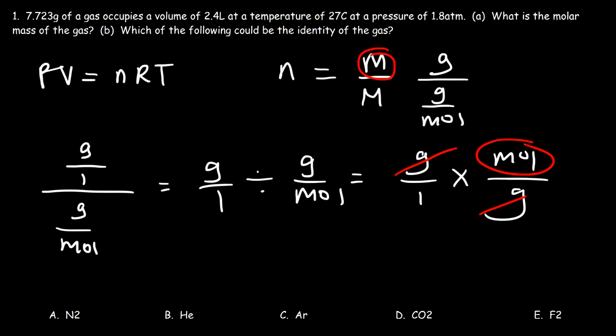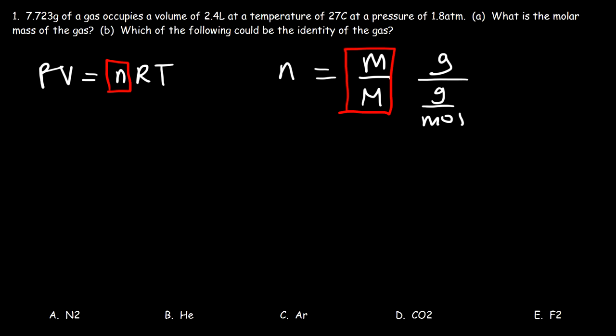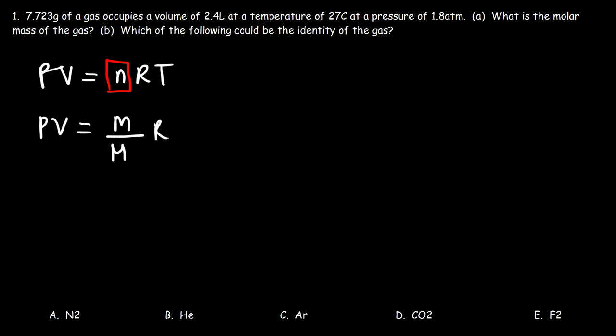So what I'm going to do is replace n with the mass divided by the molar mass. Let's use capital M to represent the molar mass. So we're going to have PV is equal to m mass divided by capital M, the molar mass, times RT.